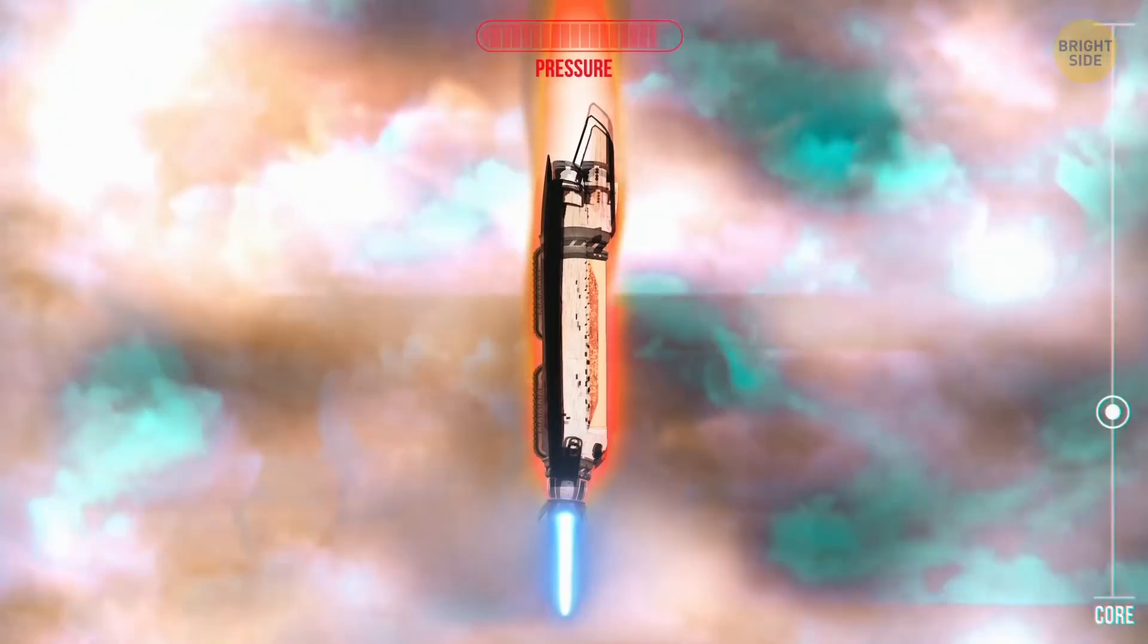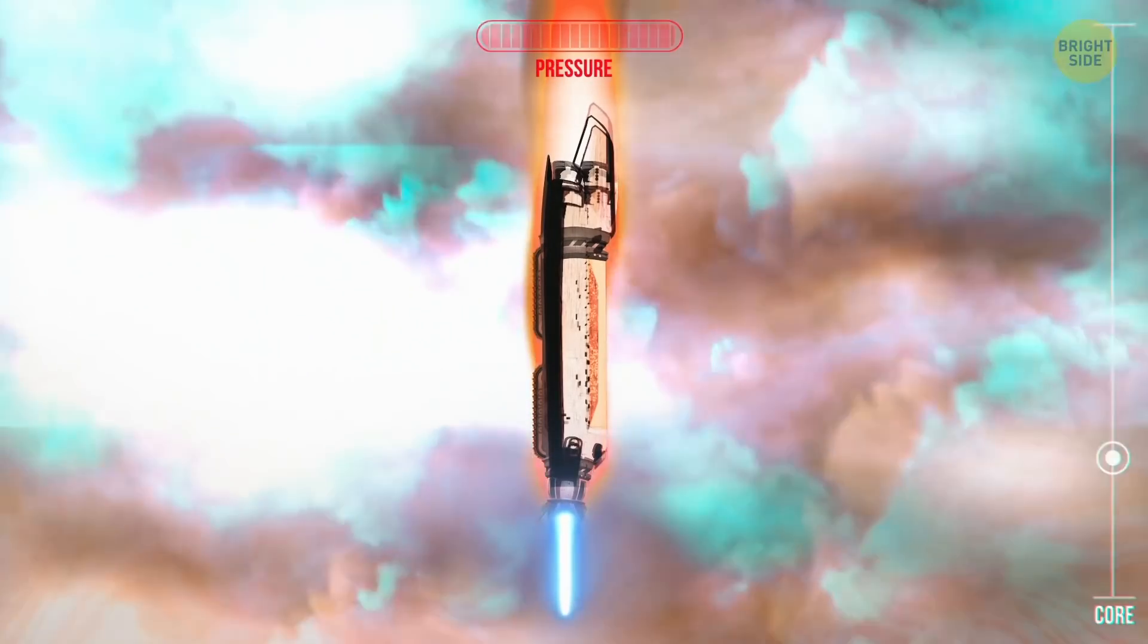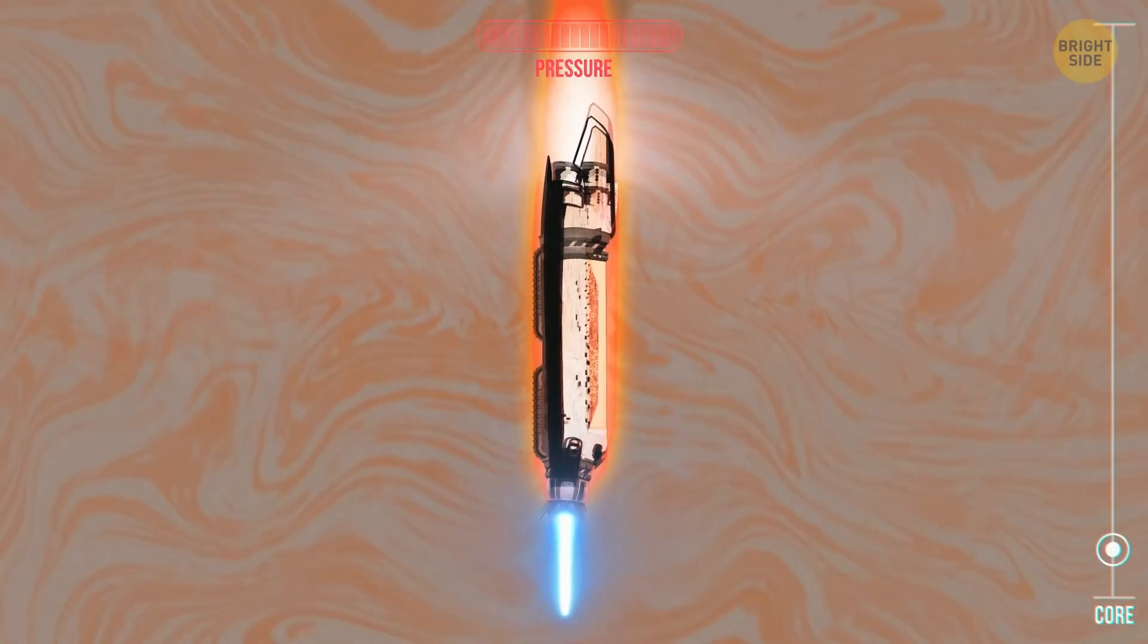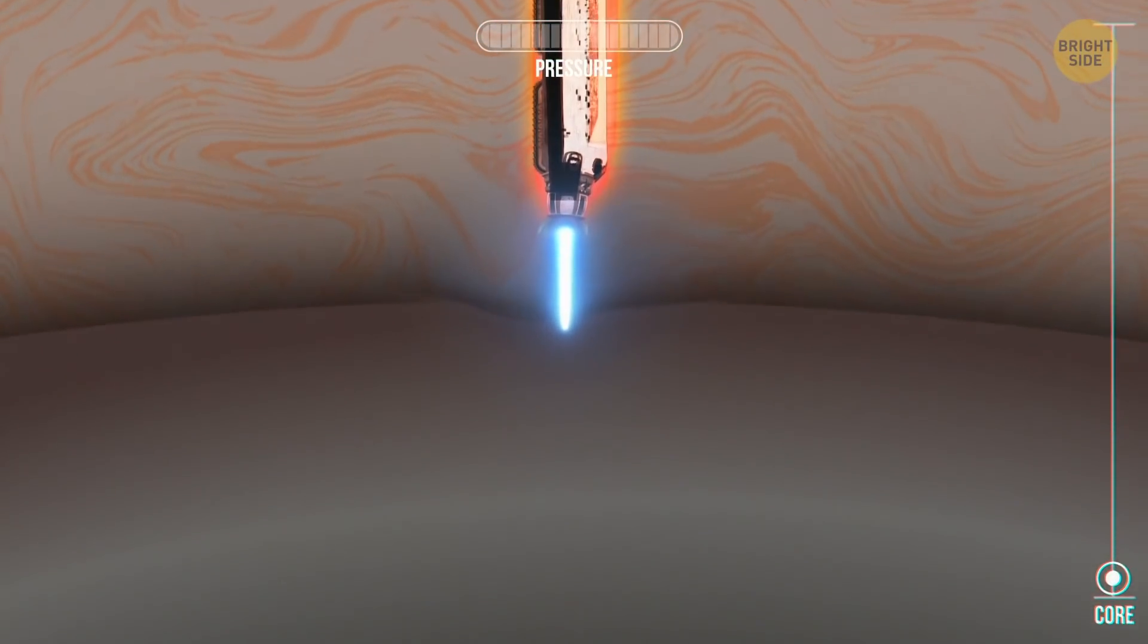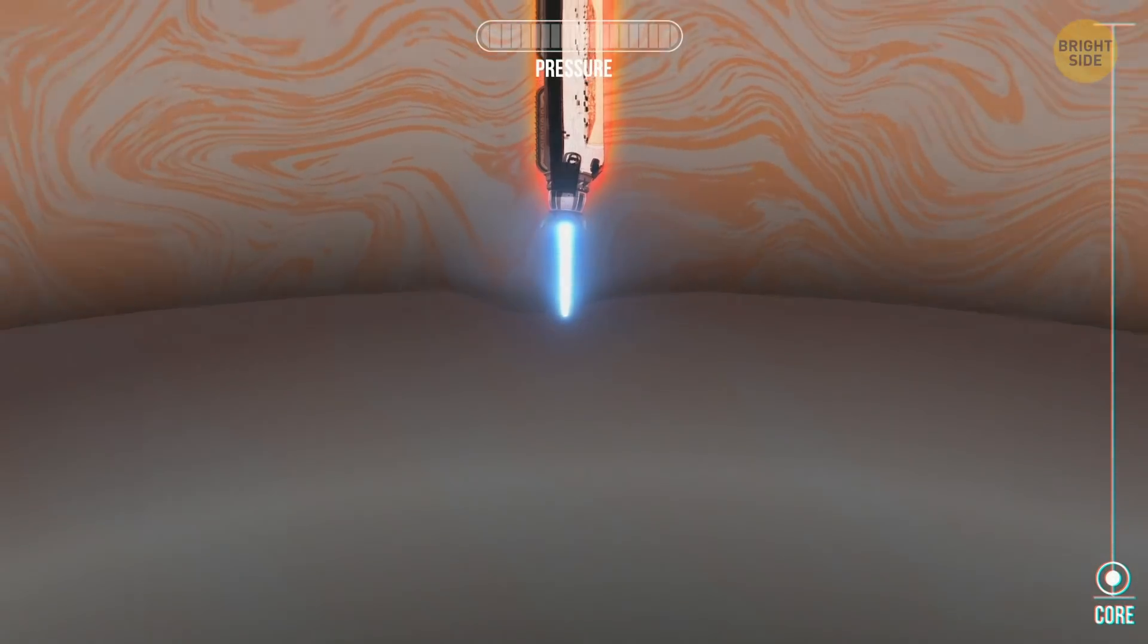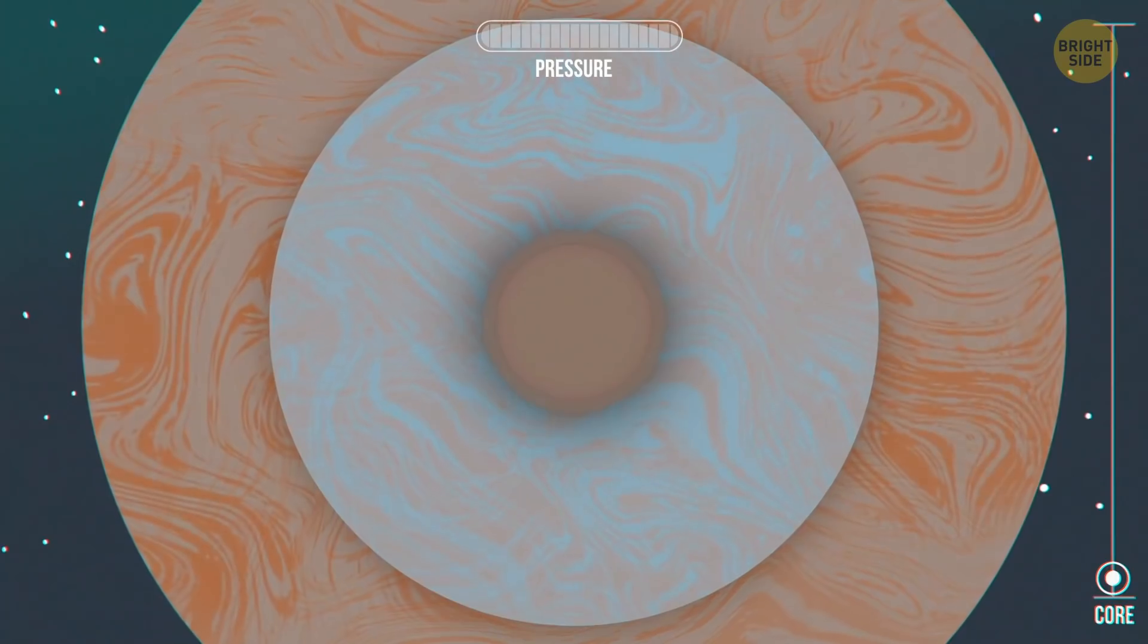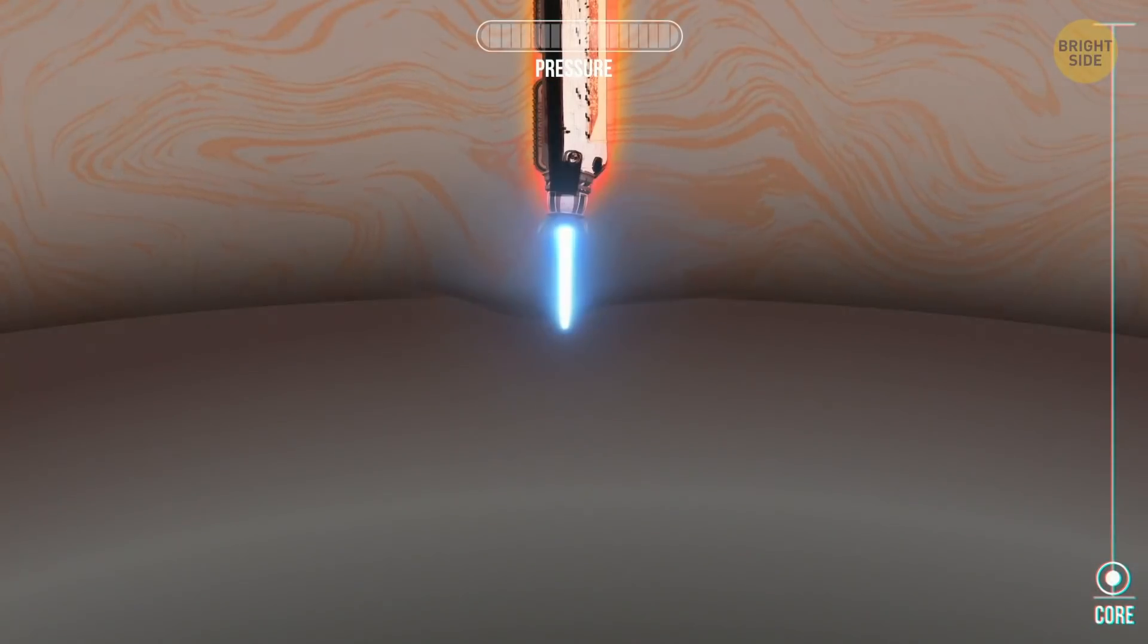At last, the pressure's become so enormous that we find ourselves in the liquid hydrogen, and here we start diving. Soon we'll reach the solid core of Saturn. Ah, here we are. It's made of iron and nickel, and is actually quite small compared to the rest of the planet. Well, the last destination awaits, so come on!